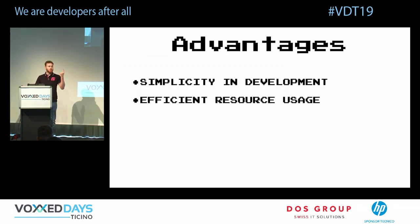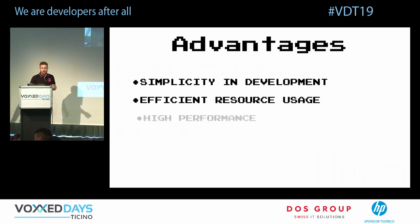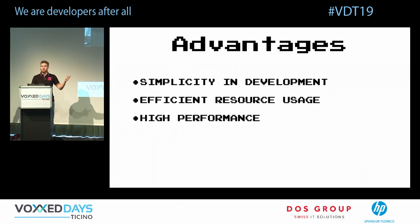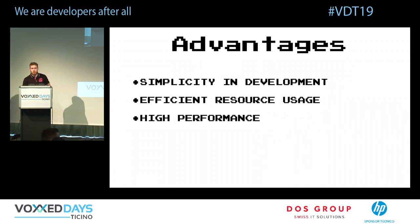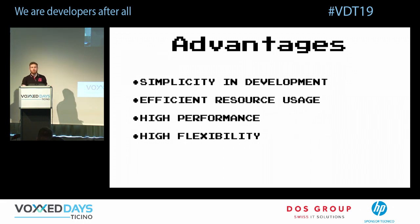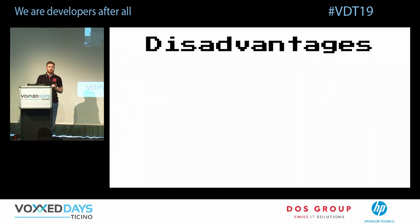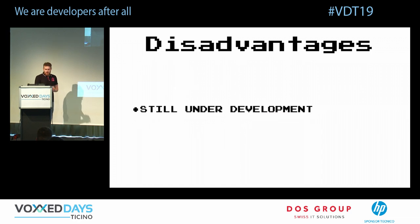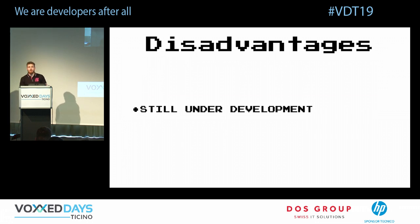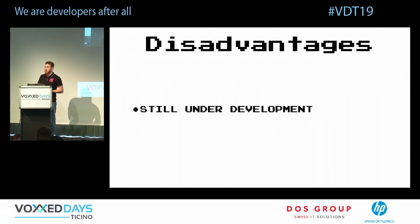To summarize the advantages: simplicity in development, efficient resource usage with a single connection and binary messages, high performance — almost the same as gRPC with only about 5% less due to binary framing overhead — and high flexibility in communication patterns with efficient reliability.